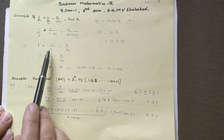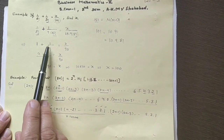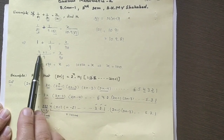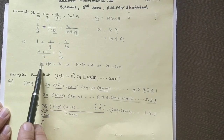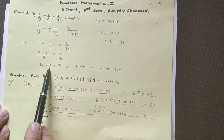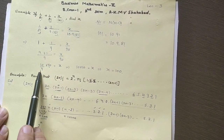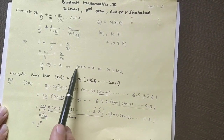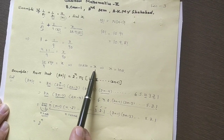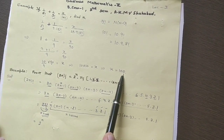Taking LCM of 9, we get 9 plus 1 over 9 equals x by 90. So 10 over 9 equals x by 90. This gives x equals 10 into 10, so x is equal to 100. This is the answer.